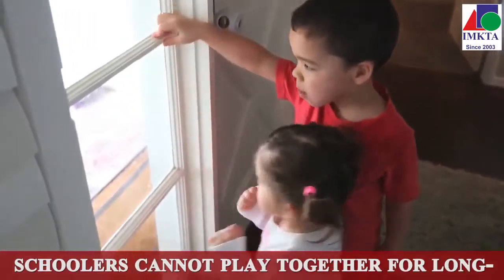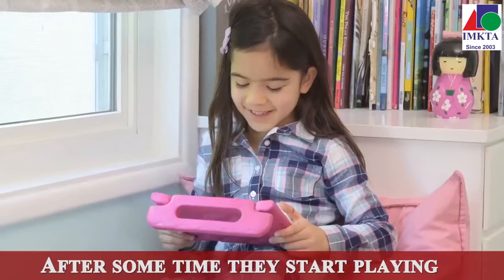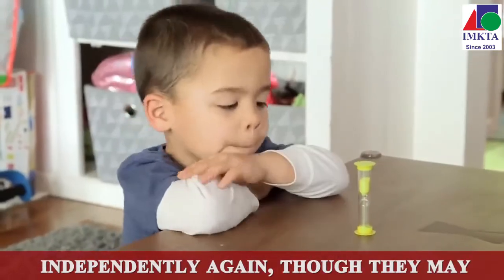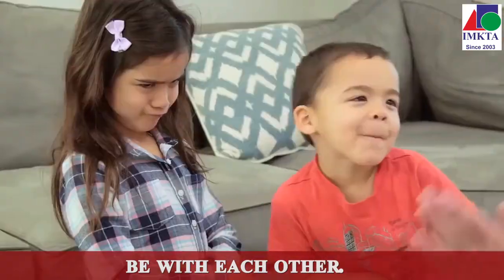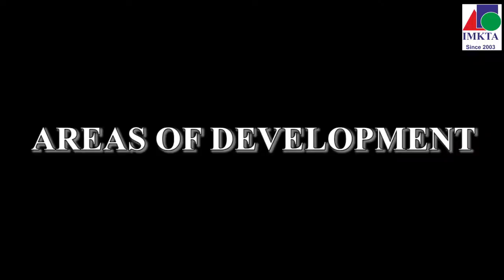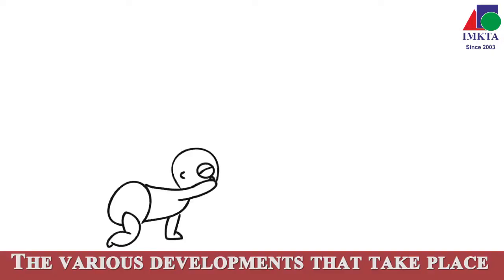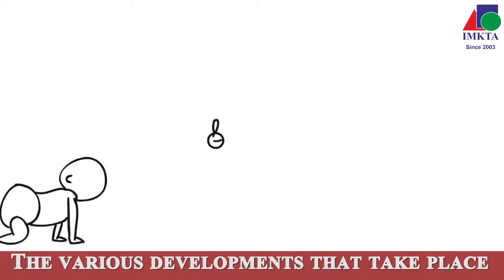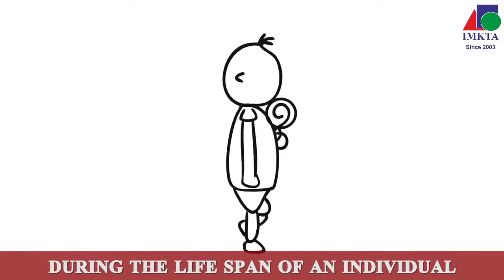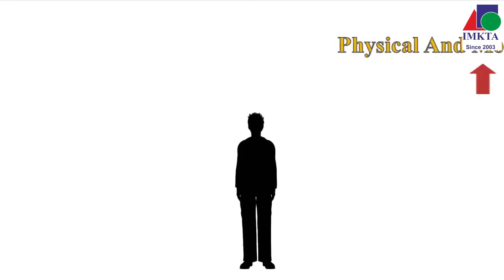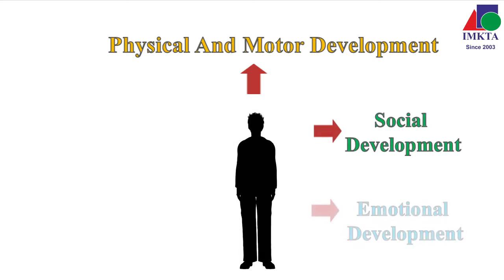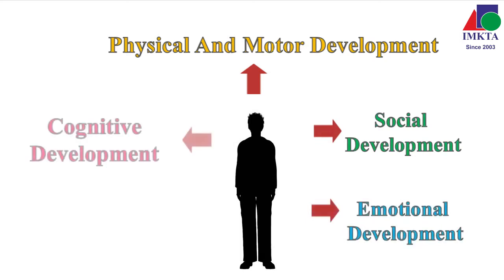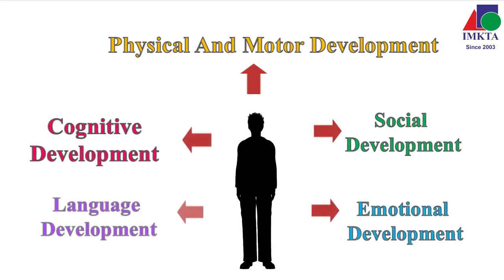Pre-schoolers cannot play together for long. After some time, they start playing independently again, though they may be with each other. Areas of Development: The various developments that take place during the lifespan of an individual can be classified as physical and motor development, social development, emotional development, cognitive development, and language development.